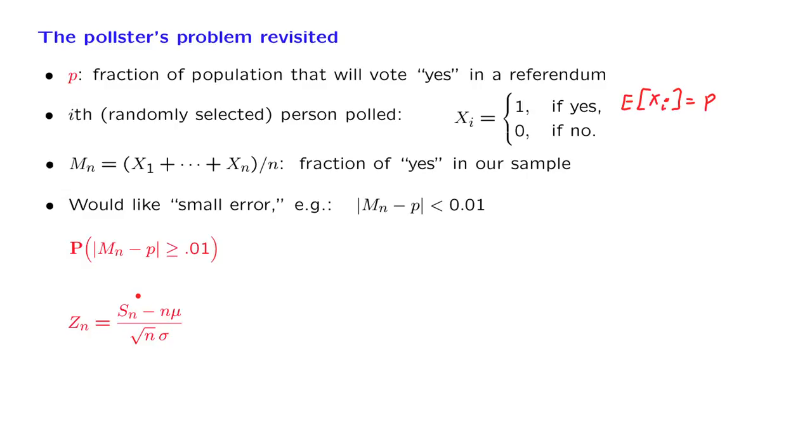The central limit theorem involves this standardized version of the random variable Sn, where Sn stands for the sum of the X's. We know that this random variable is approximately normal. What we want to do now is take this event and rewrite it in an equivalent way which involves this random variable Zn. So let us start. First, we note that here we have a mu and a sigma, so we should know what these are. For a Bernoulli random variable, the mean is what we already wrote down, and sigma is the square root of p times 1 minus p.